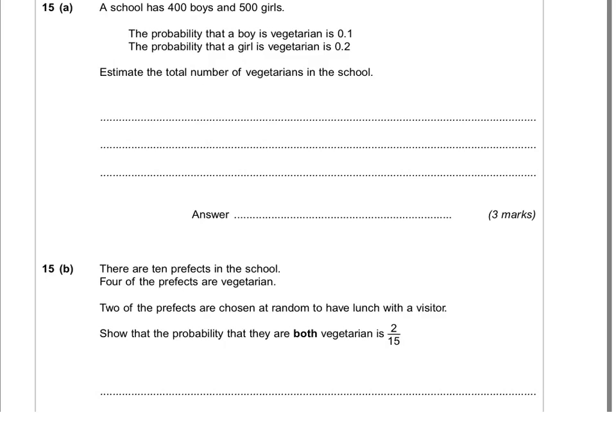Estimate the total number of vegetarians in the school. So we want the total, and we know that boys are 0.1, and all together there are 400 boys. So 400 boys times 0.1 equals, that's just place value, so 40.